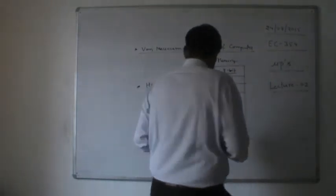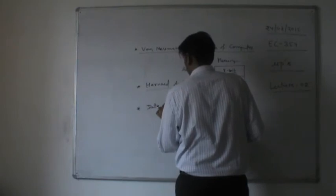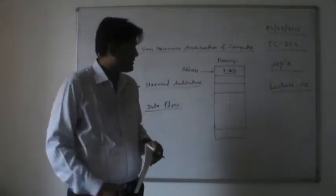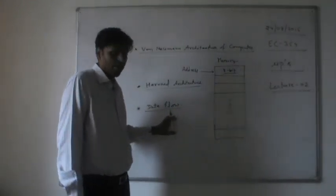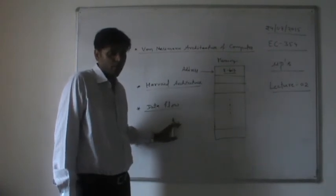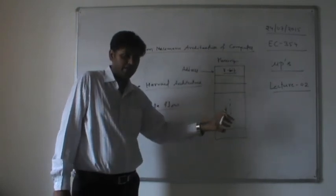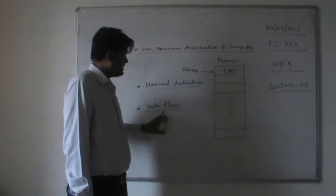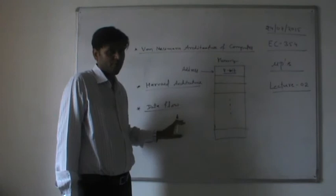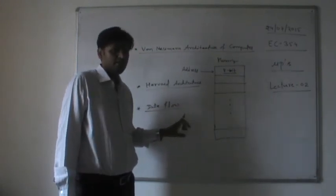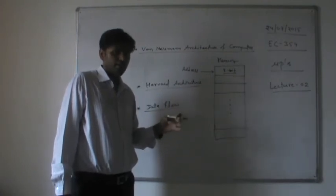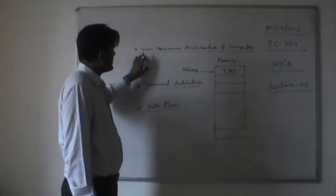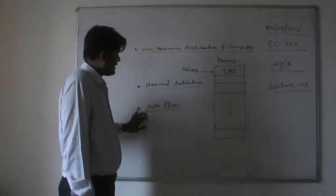A third architecture is the data flow architecture. In data flow architecture there is no program counter. A bunch of binary instructions are fetched from memory at a time, and when they are required by the microprocessor they are provided. So these are the three computer architectures: von Neumann, Harvard, and data flow.